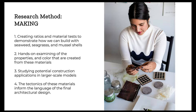My process was about creating ratios and material tests to demonstrate how we can build with these materials. After I had created all my base ratios and base materials that I was pleased with, I then examined the properties and colors from these materials, compared and contrasted them, and thought about the best possible applications. I then scaled up to larger scale models and looked at construction and architectural applications. The tectonics from the joining of these materials formed the final language of my architectural design.